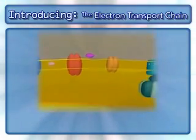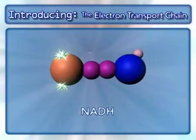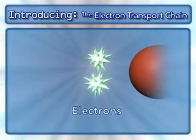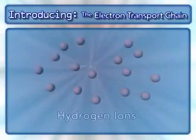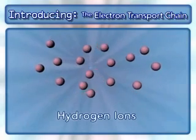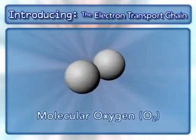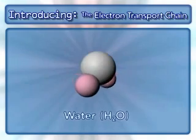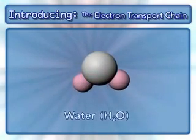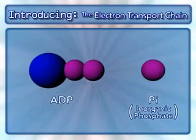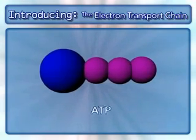Other key components in this process are NADH and the electrons from it, hydrogen ions, molecular oxygen, water, and ADP and inorganic phosphate, which combine to form ATP.